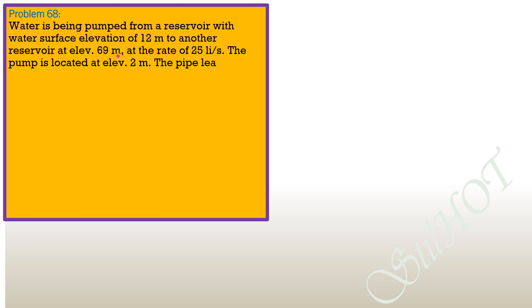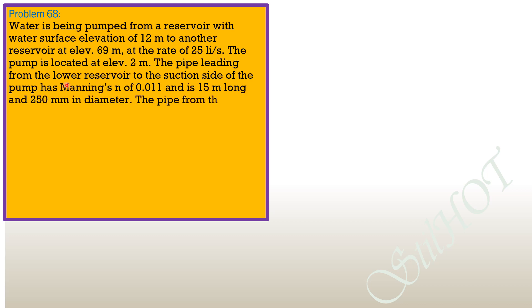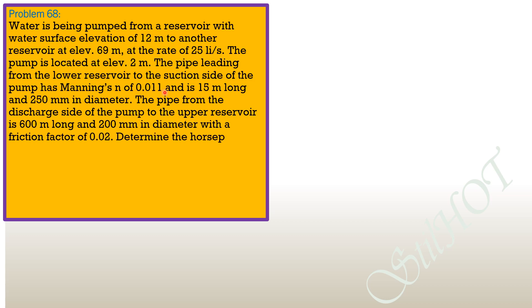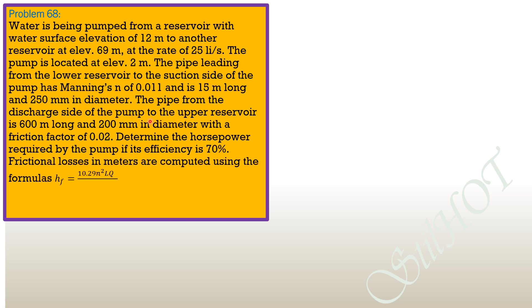Problem 68: Water is being pumped from a reservoir with water surface elevation of 12 meters to another reservoir at elevation 69 meters, at the rate of 25 liters per second. The pump is located at elevation 2 meters. The pipe leading from the lower reservoir to the suction side of the pump has Manning's n of 0.011, is 15 meters long and 250 mm in diameter.